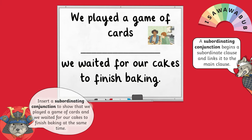Do you have an answer? Brilliant. Remember, we want the sentence to tell the reader that the two actions happened at the same time. To do this, we could use the subordinating conjunction 'while': 'We played a game of cards while we waited for our cakes to finish baking.' You could have also used the subordinating conjunctions 'whilst', 'as', or 'when'.